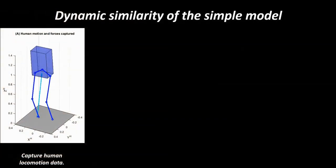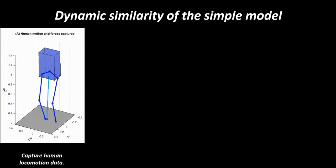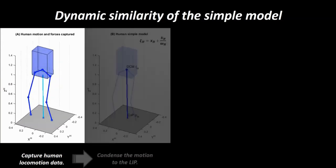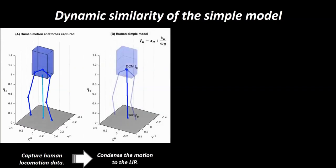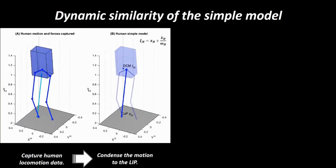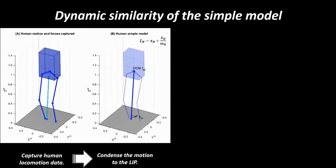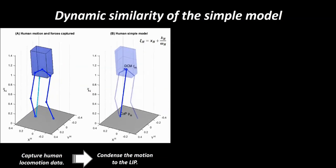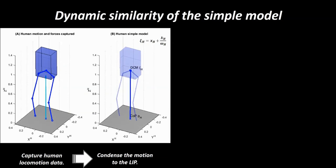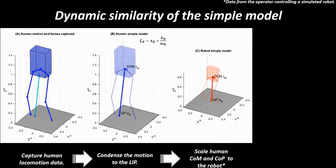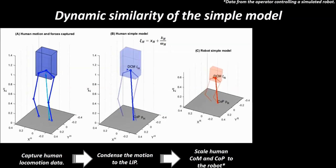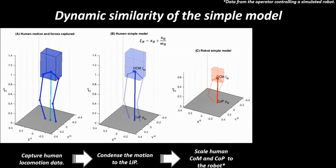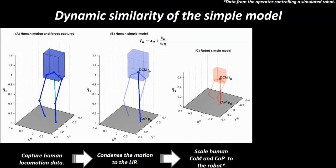To make the robot dynamically move in synchrony with the operator, we first capture the human motion trajectory and condense this data using the pendulum model. The motion is fundamentally described by the translation of the center of mass and the center of pressure. Next, we scale the motion of the pendulum model to robot proportions.